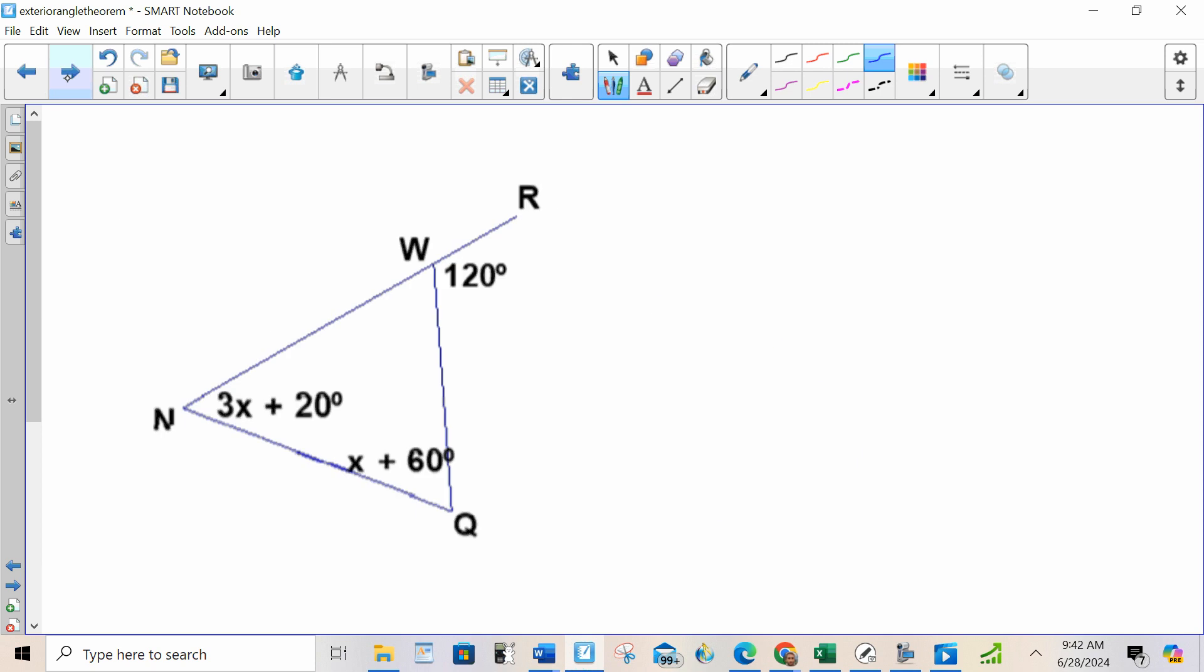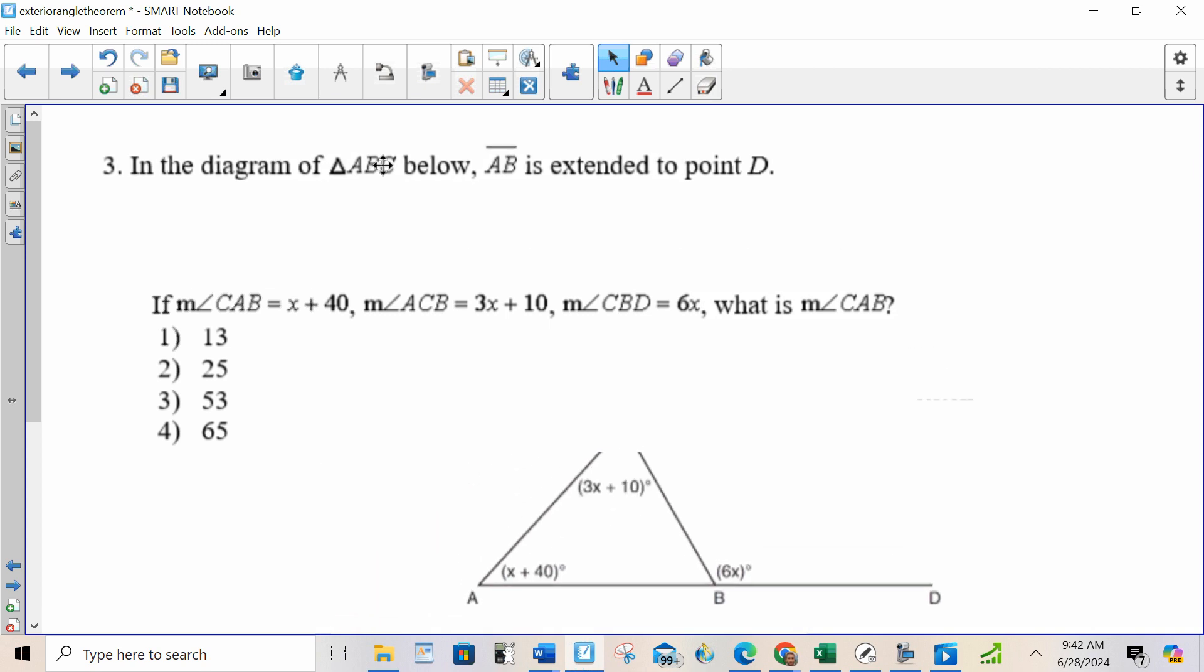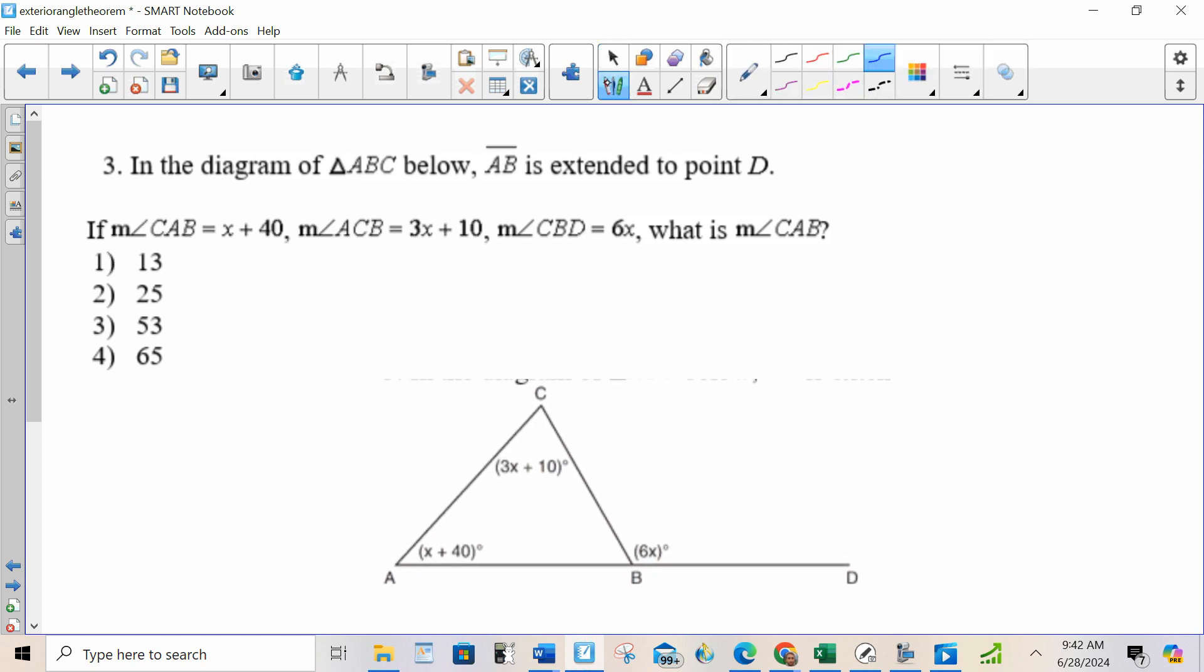Let's jump to number three. They put the information into the picture for you already. Well, I see an exterior angle. I know that the exterior angle is equal to the sum of the two non-adjacent interior angles. So I'm going to add the interior angles to equal the exterior angle.